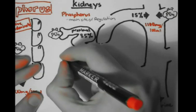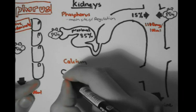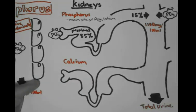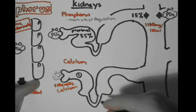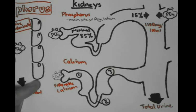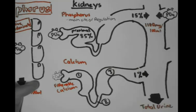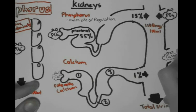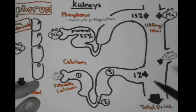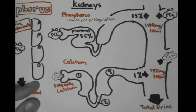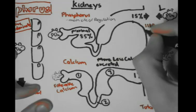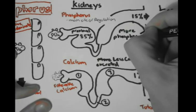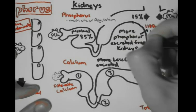For calcium, mostly filterable calcium is absorbed within the kidneys. By order of where it is mostly absorbed within the nephron: it is mostly absorbed in the proximal convoluted tubules, then the loop of Henle, then the distal convoluted tubules. Only 1% of the total calcium regulated in the kidneys is excreted as urine, which is 150 mg per 100 ml daily. This means less calcium is regulated within the nephrons, which is why phosphorus is the main regulation site in the kidneys.